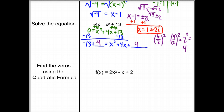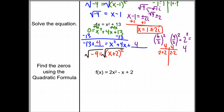Now let's clean up the left-hand side: negative 9 equals, and we'll make that t-chart. It has to multiply to 4 and add to 4 — that would be 2 and 2. So we have x plus 2 squared. Now we're going to solve by undoing, so we're square rooting both sides. We have the square root of negative 9 equals x plus 2. We're going to break up that negative 9: the square root of negative 1 times the square root of 9.